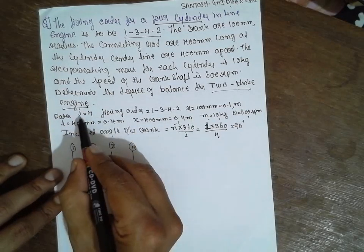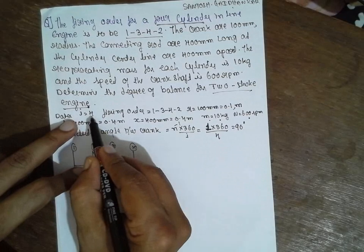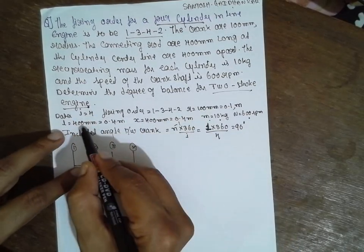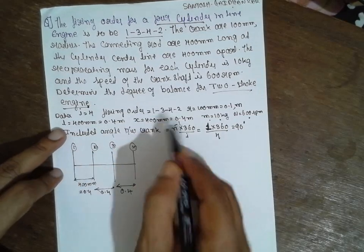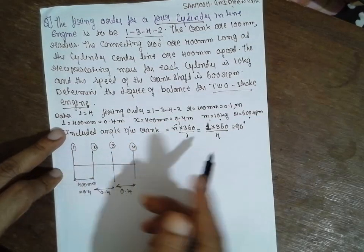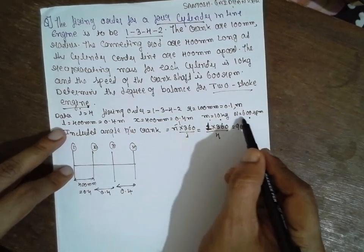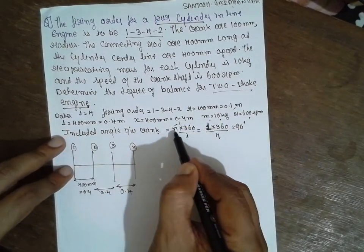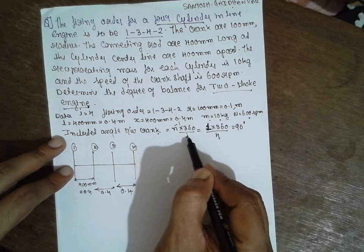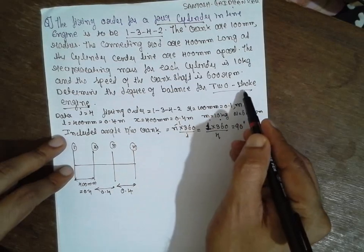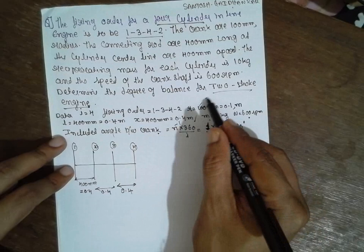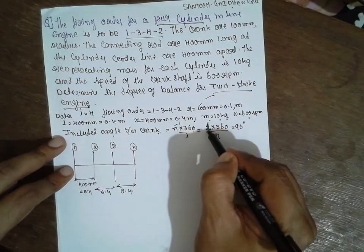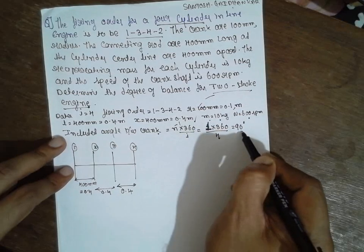I equals 4 for the four-cylinder engine. The firing order, crank radius, and connecting rod length are all given, with the four planes 400 mm apart. Now we find the crank angle using the formula: N times 360 divided by I. For a two-stroke engine, N equals 1; for four-stroke, N equals 2. So 1 times 360 divided by 4 gives 90 degrees.